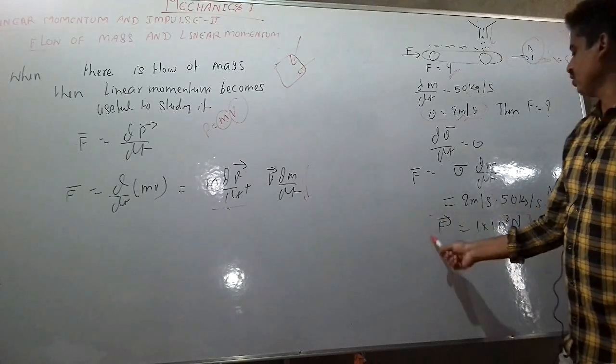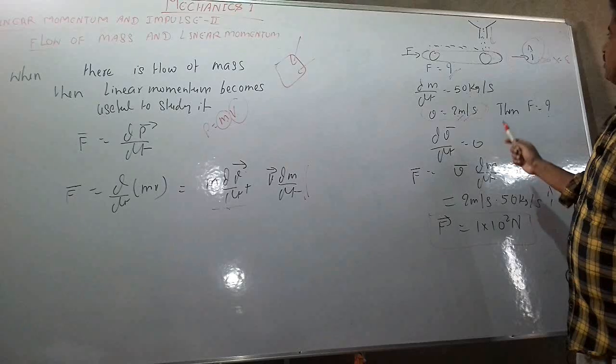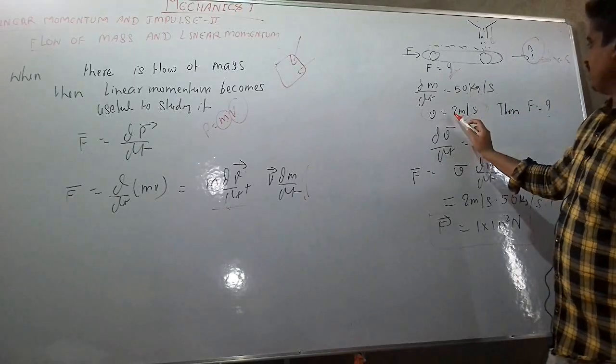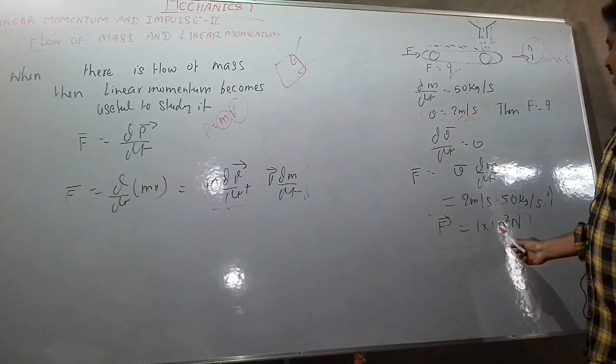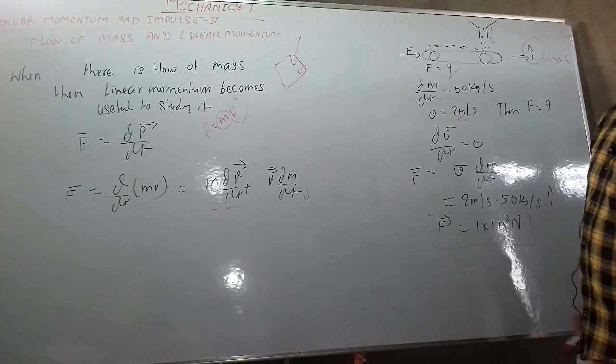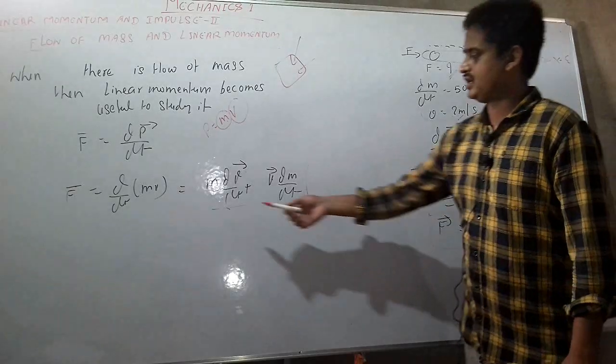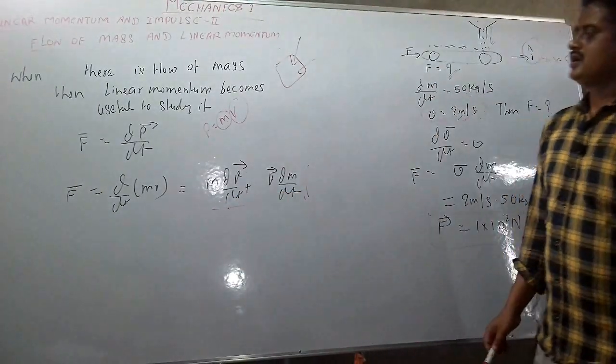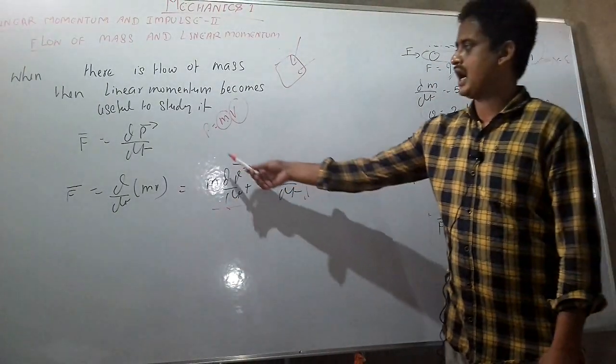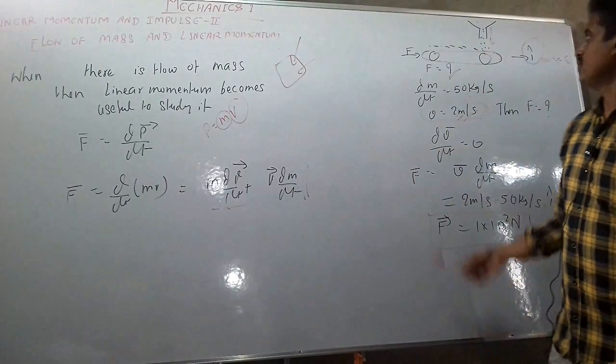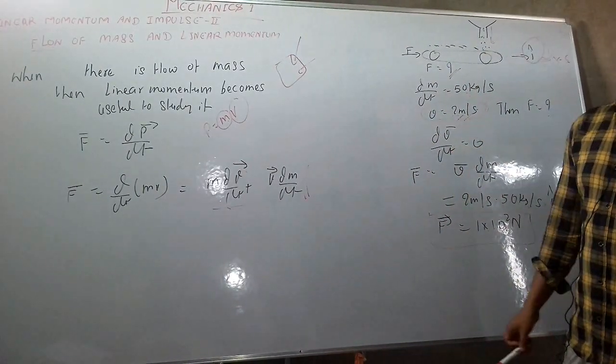So the force needed to maintain this velocity 2 meter per second. So this is the answer and this is how we can use this idea of linear momentum to solve any problem of variable mass.